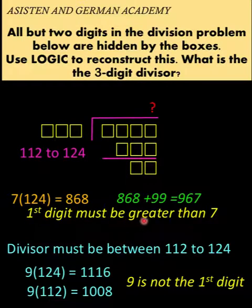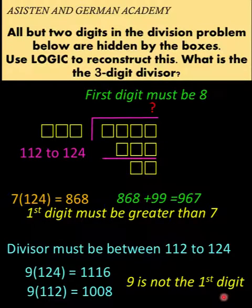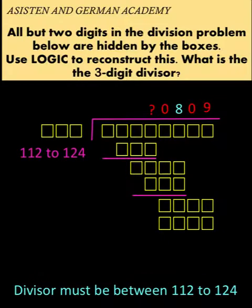So if the first digit must be greater than 7, and 9 is not that first digit, in the range of whole numbers from 1 to 9, there is only one number left, and that number is 8. And so we now conclude that the value of this question mark must be 8. And so going back now to our original problem, we now know that the value of this question mark is 8, and our quotient is 80,809.